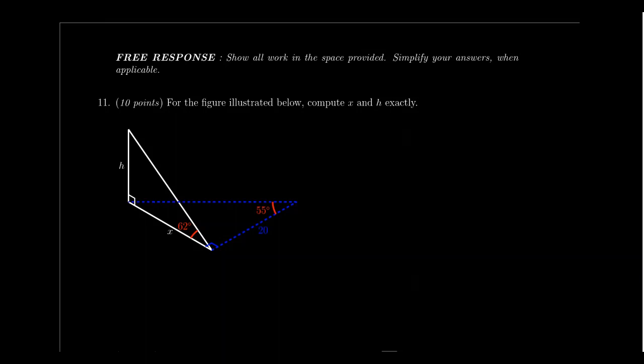We are now entering the free response section of the test. This part will be taken separately from the multiple choice section. You are allowed a calculator and a 3x5 note card on this portion. You won't have the formula sheet, but you can put whatever formulas you need on your note card. There are five questions in this section, and on average they are about 10 points each.